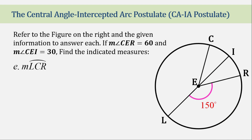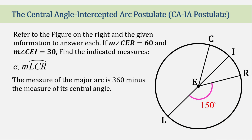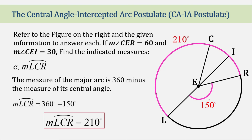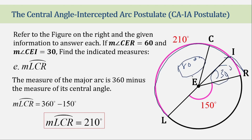Now for arc LCR. The whole circle is 360 degrees and we have arc RL as 150 degrees. Subtracting 150 from 360 gives us 210 degrees. Alternatively, using the semicircle (180 degrees) and adding 30 degrees gives us 180 plus 30 equals 210 degrees.